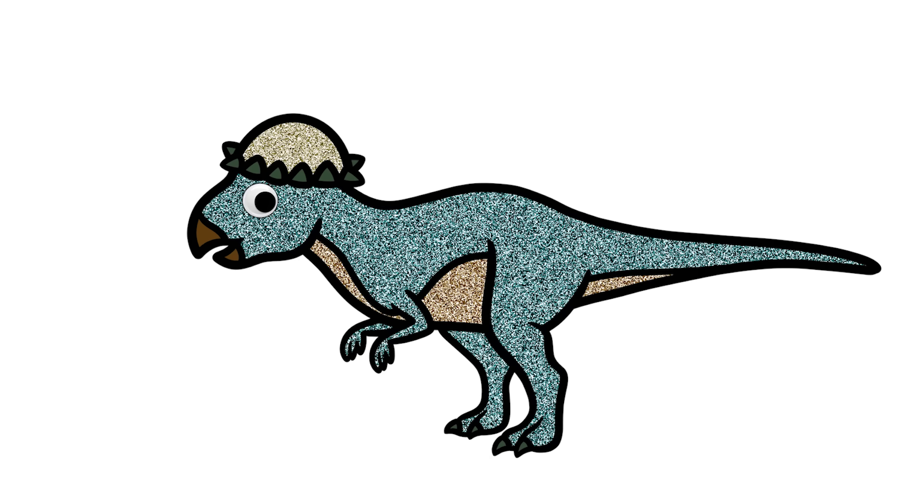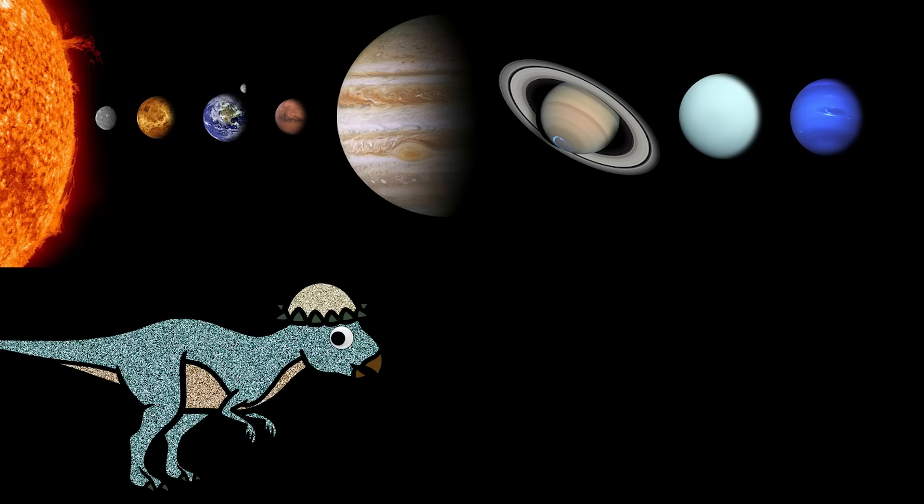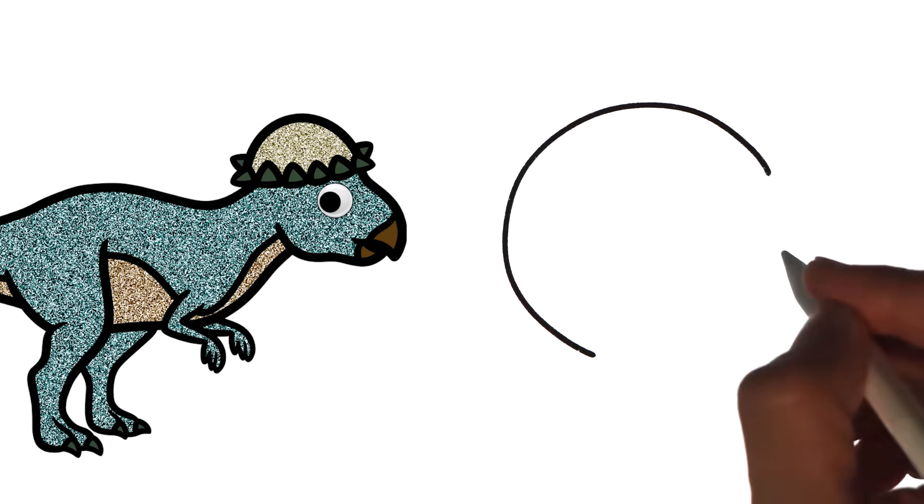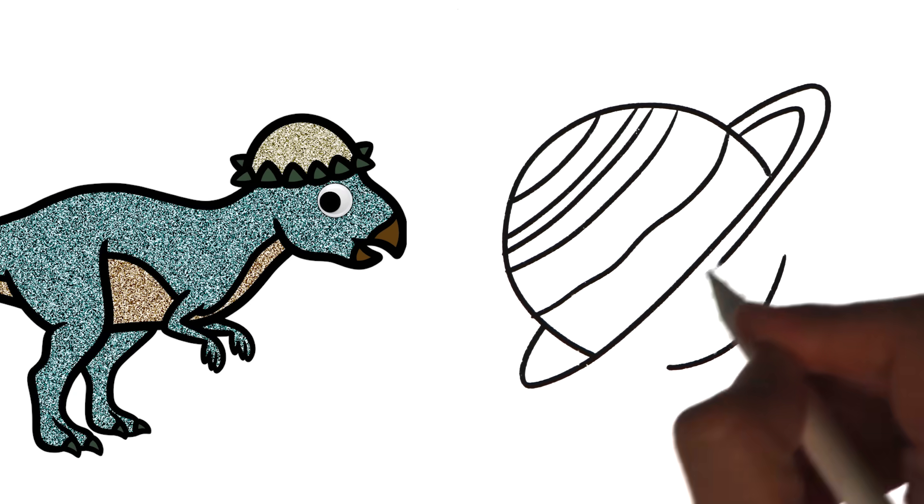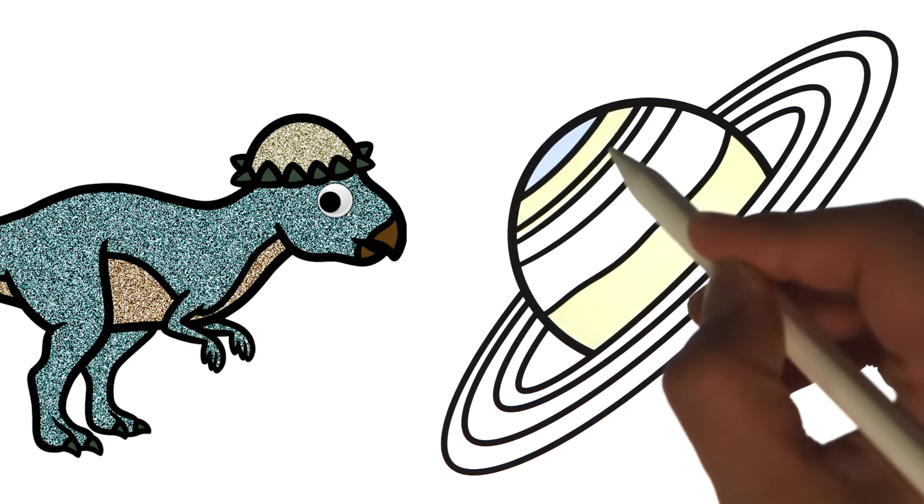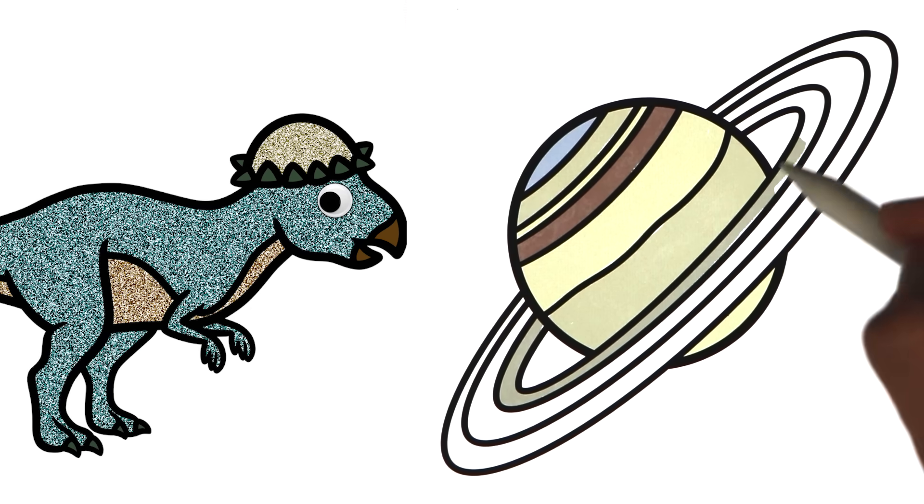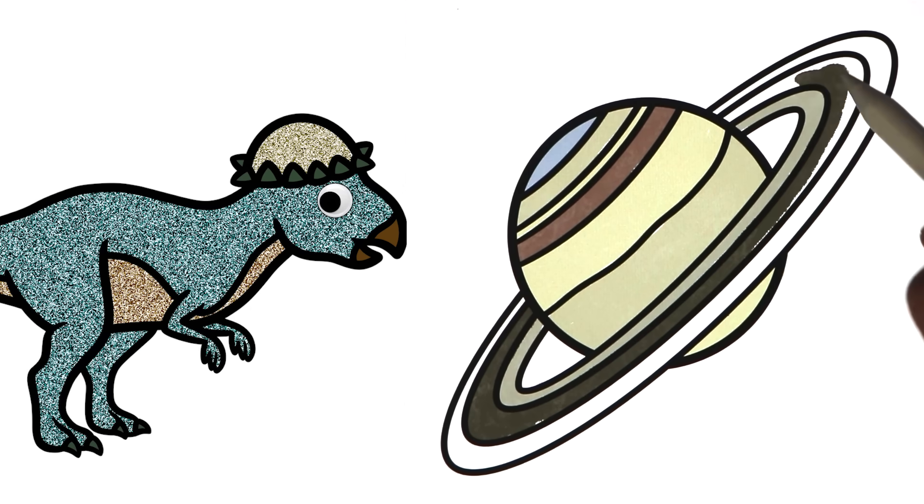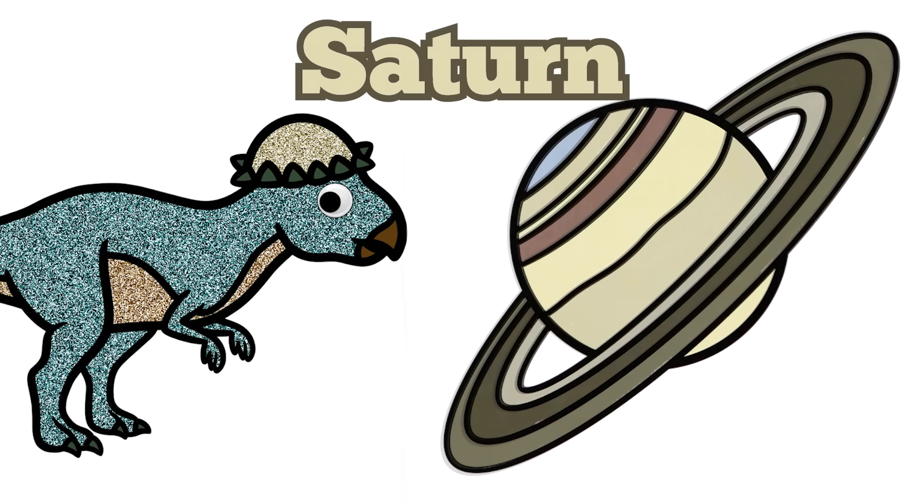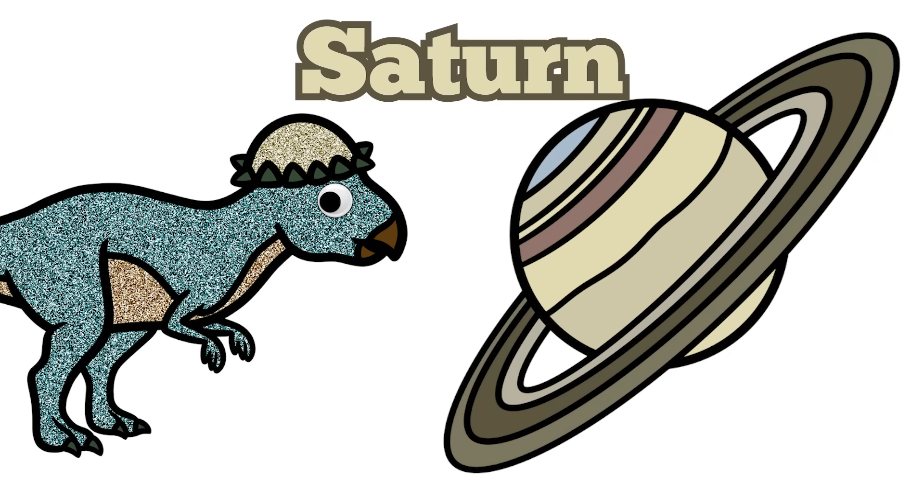Hello. My name is Pachycephalosaurus. Hello, Pachycephalosaurus. What's it like on Saturn? Saturn is the sixth planet from the sun. And I can tell you that Saturn has the most beautiful rings. It has a beautiful set of seven main rings with spaces between them. Thank you, Pachycephalosaurus. Bye. Bye, everyone.